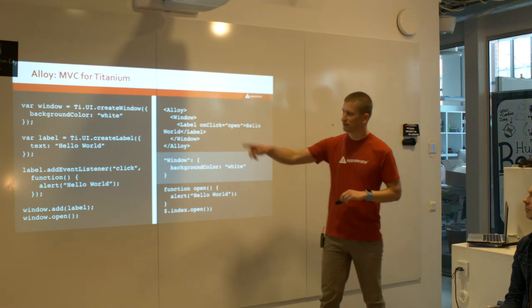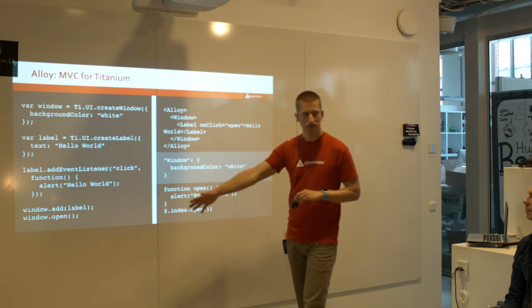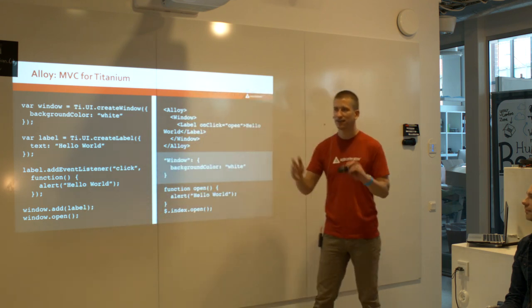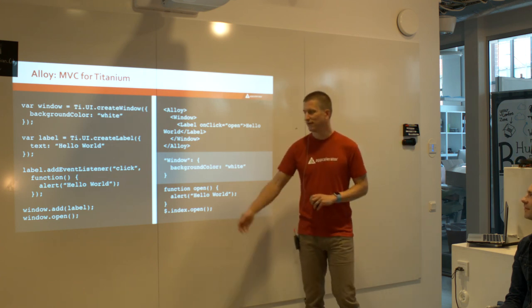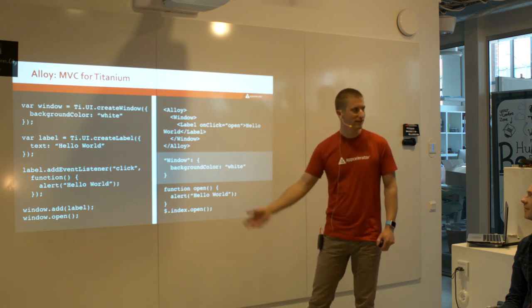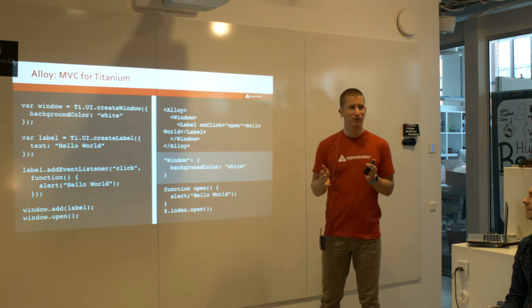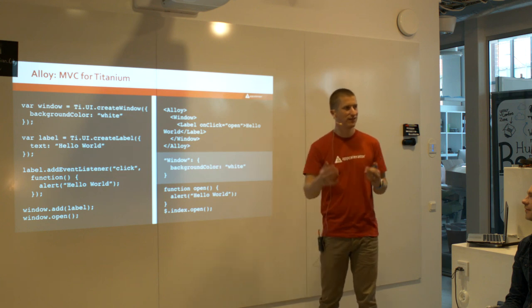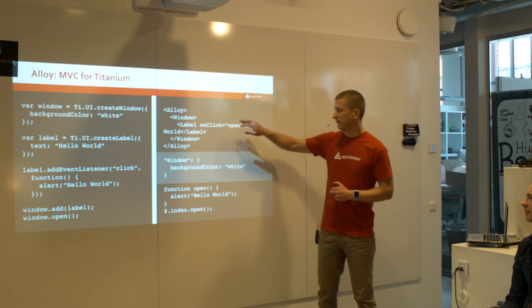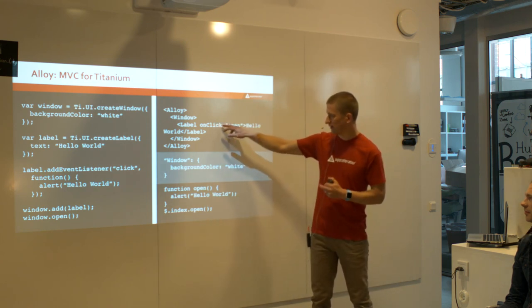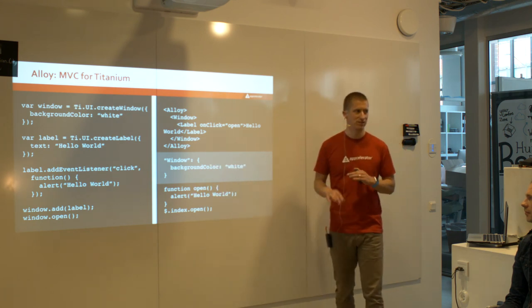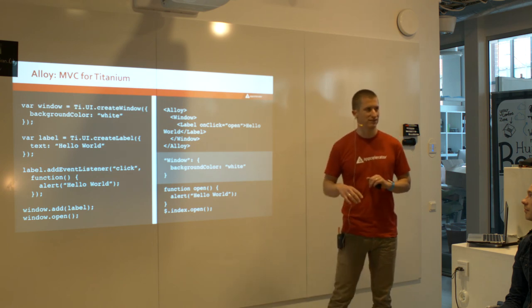What is Alloy? In Classic Titanium, you have markup, styling, and logic all in one file — and if you have a complex view, there's no way to tell how that view is constructed just by reading the code. You have to run the app. With Alloy, you write your markup in XML, so you immediately know — this is a window with a label in it. You can bind event listeners like you do in HTML, with just the event listener in your JavaScript. You have your styling in separate TSS files, which is similar to CSS but a subset of it. This means you can have your designer handle the TSS — setting padding, colors, and so on — and tell them not to touch any of the JavaScript.